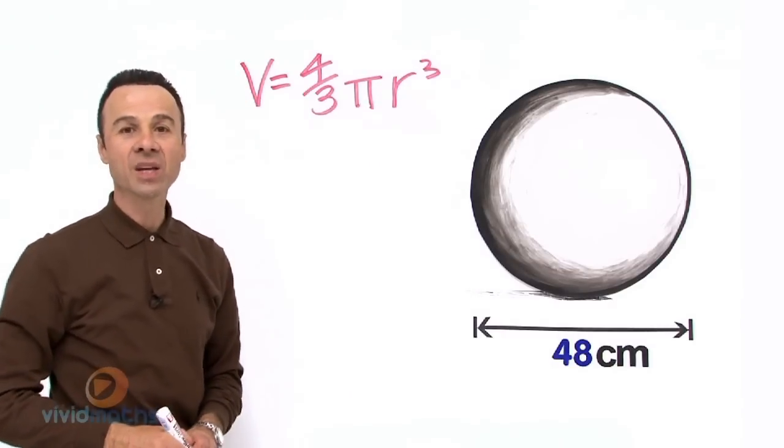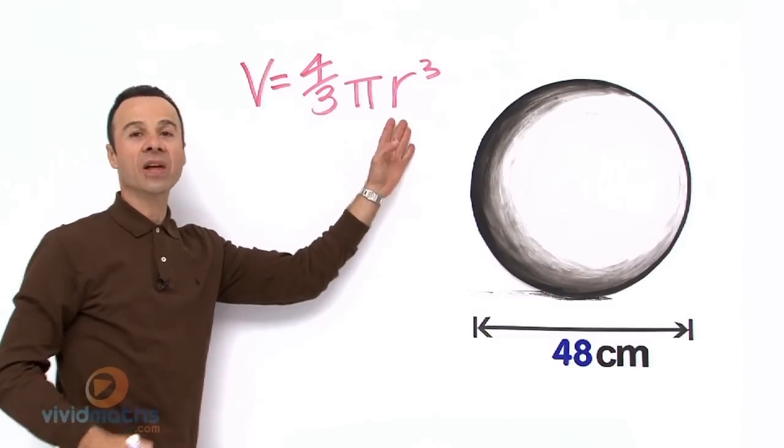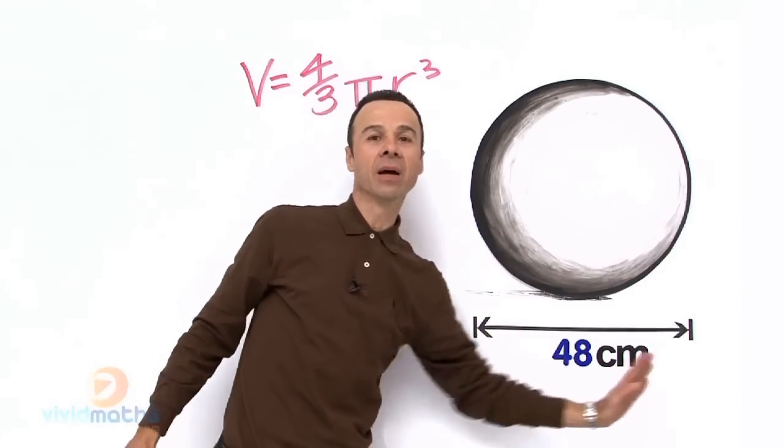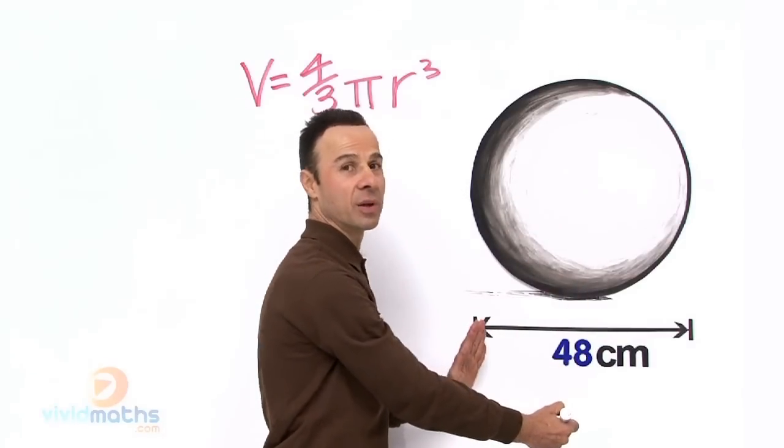Volume for a sphere is 4/3 π r³. The radius is cubed, that is what we are looking next. Have a look here, our diameter is 48. Let us halve it so we can get that radius right in the middle.